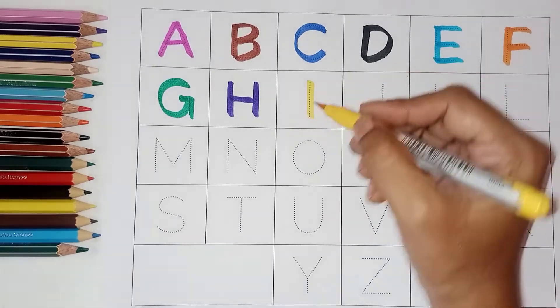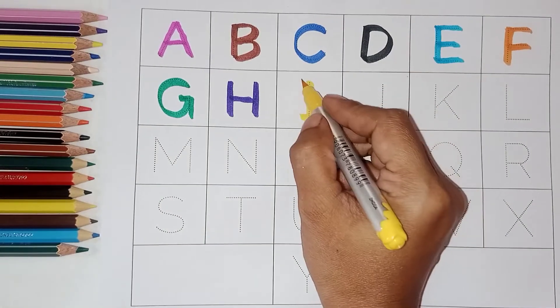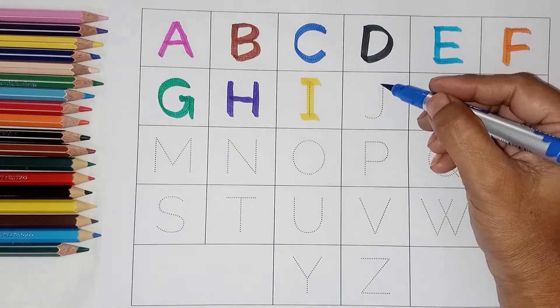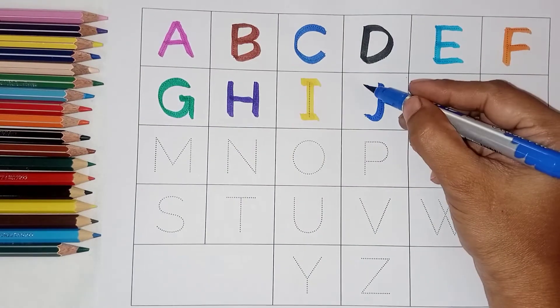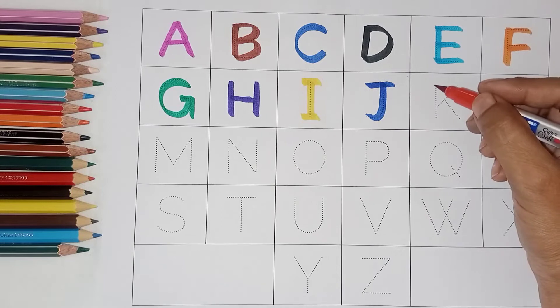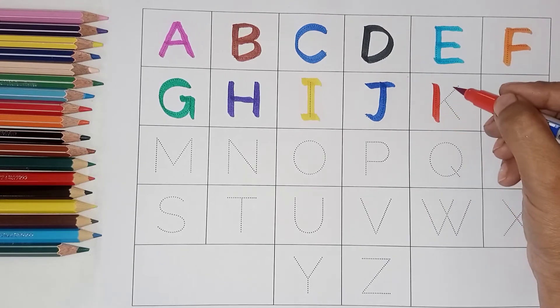I. I for ink pot, I for ink pot. J. J for jug. K. K for kite.